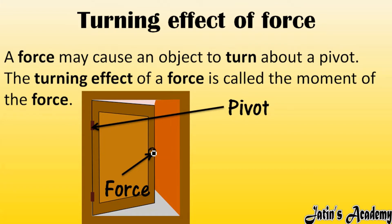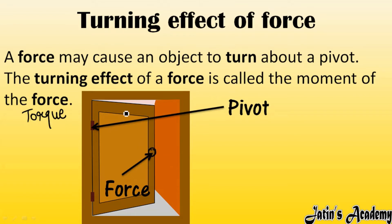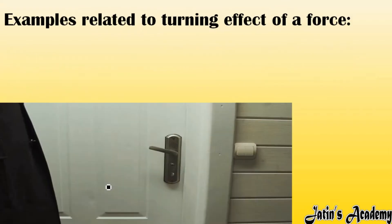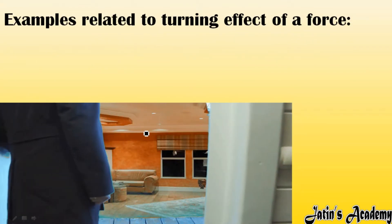Whenever we apply force to any object and that object starts turning about a fixed point, that is known as the turning effect of force. The turning effect of force is also called the moment of force, and a third name is torque. Torque refers to the same concept: when we apply force to an object and it starts rotating about a fixed point. We represent torque by the symbol tau (τ).